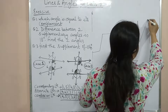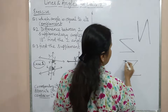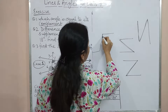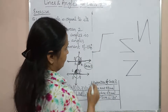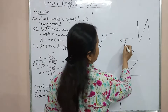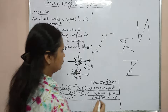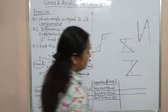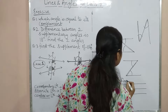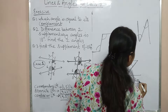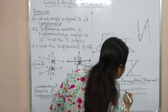In the Z formation, two lines are parallel and cut by a transversal. The angles formed at the bends of the Z shape are alternate angles. Whether the Z is normal or reversed, the formation still gives you alternate angles. This physical formation will help you recognize them quickly.